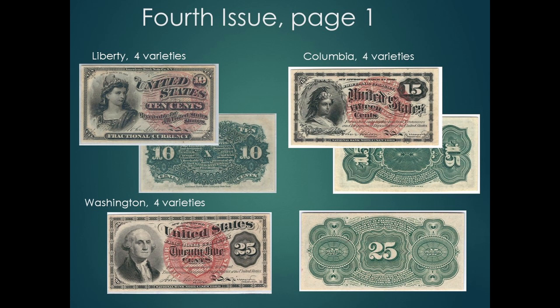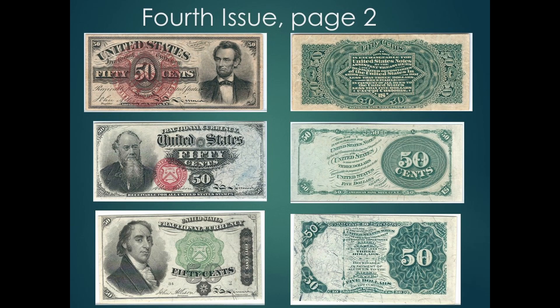The fourth issue is the first time the Treasury seal was used. All notes have printed signatures. There are no red backs, and most printing was done by the bank note companies. There were three different 50-cent notes in the fourth issue, each with only one variety. The top note pictures Abraham Lincoln. The Lincoln note is popular with collectors in several collectible areas, and with popularity comes increased cost. The middle note pictures Edward Stanton, Lincoln's Secretary of War. The bottom note pictures Samuel Dexter, Secretary of War and of the Treasury, from 1800 to 1801. Each note is a different size, with the Dexter note being the tallest of any of the notes from any issue.